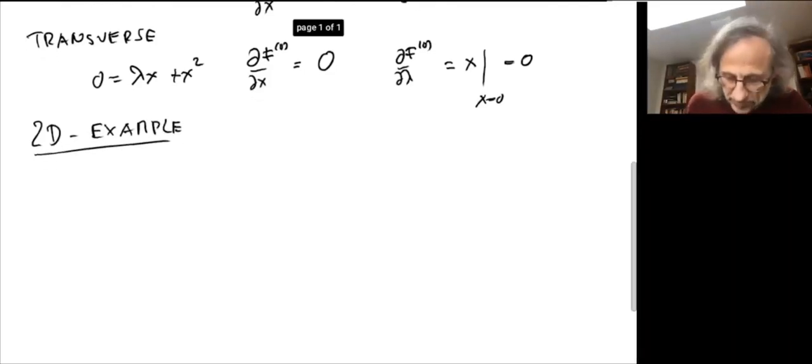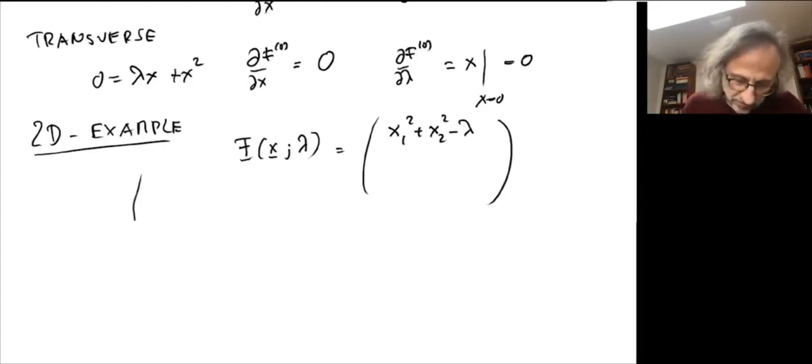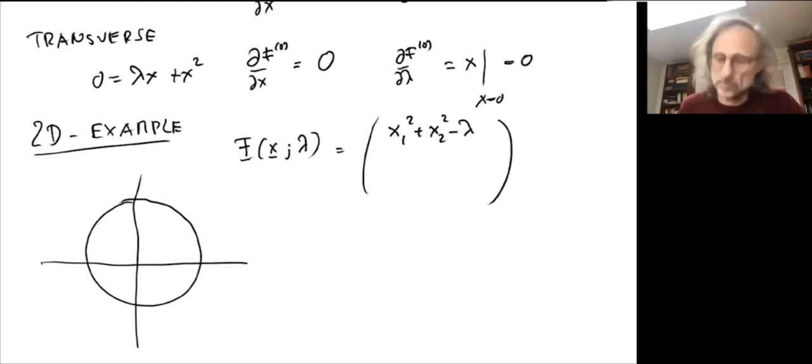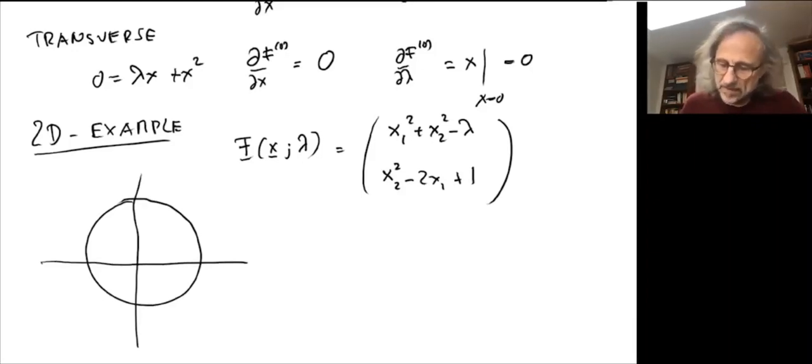Let's take a two-dimensional example. So say we have the function f of x and our parameter is lambda. Let's say it's x1 squared plus x2 squared minus lambda, which actually, if you do it geometrically, is simply a circle with radius squared of lambda. And the other, the y component of the function is maybe x2 squared minus 2x1 plus 1, which is a parabola. So you can see this is like x1 equals one-half x2 squared plus 1.